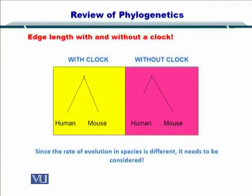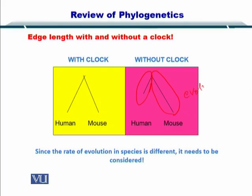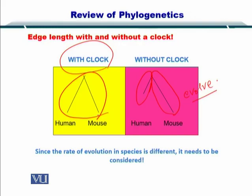We also looked at the molecular clock. The edge length in a phylogenetic tree represents the time it has taken to evolve. With the clock, the lengths of these branches are equal, but since the rate of evolution differs across lineages, you may want to go without a clock.